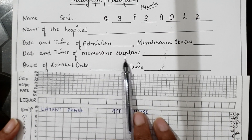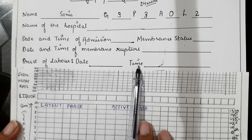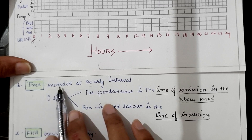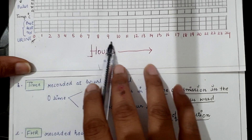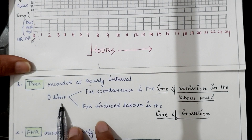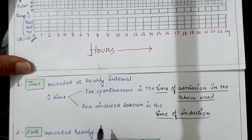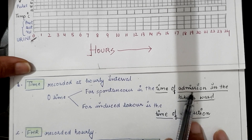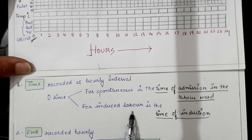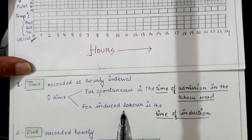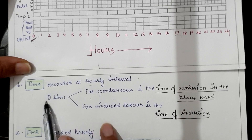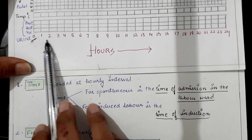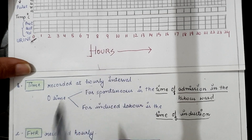Also recorded are the date and time of membrane rupture and the onset of labor. Next is time, recorded at hourly intervals. In the case of spontaneous labor, the time of admission to the labor ward is considered as zero time. In the case of induced labor — when contractions are initiated with drugs like prostaglandin, oxytocin, or by artificial rupture of membranes — the time of induction of labor is considered as zero time, after which the progress of labor is recorded on the partograph.